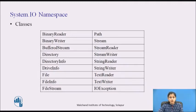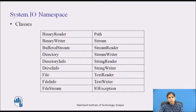A file is an ordered and named collection of bytes that has persistent storage. When we work with files, we work with directory paths, disk storage and file and directory names. In contrast, a stream is a sequence of bytes that we can use to read from and write to a backing store, which can be one of several storage mediums, for example disks or memory. Just as there are several backing stores other than disks, there are several kinds of streams other than file streams, such as network, memory and pipe streams.